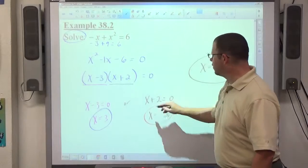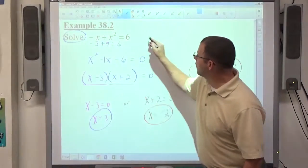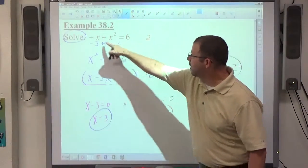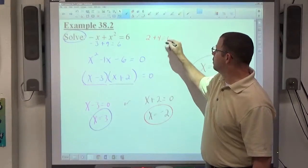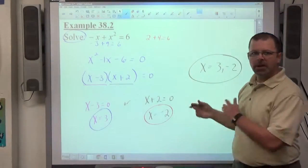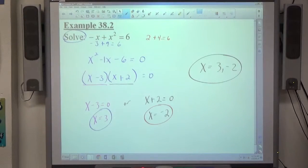If we're testing this number, negative 2, if I put negative 2 in for x, I'm going to get positive 2. Negative 2, negative 2 squared is going to be positive 4 equals 6, and 2 plus 4 equals 6, also true. That just verifies the fact that those answers are correct.